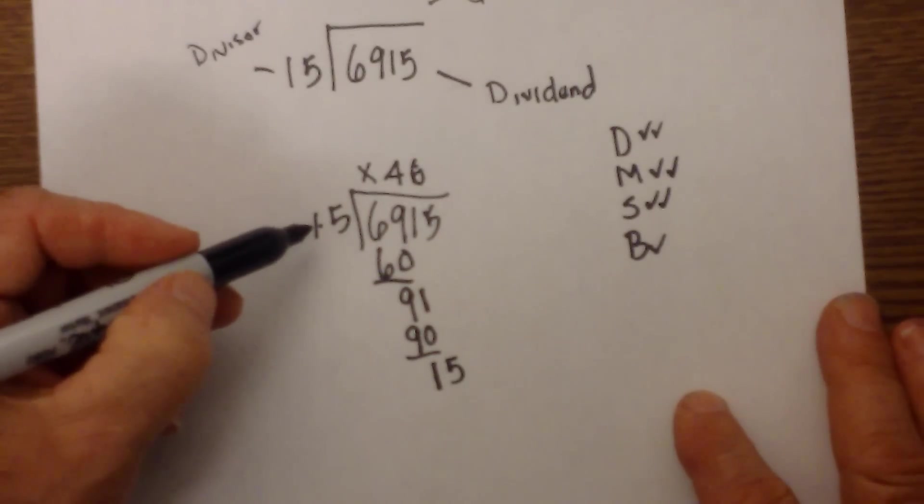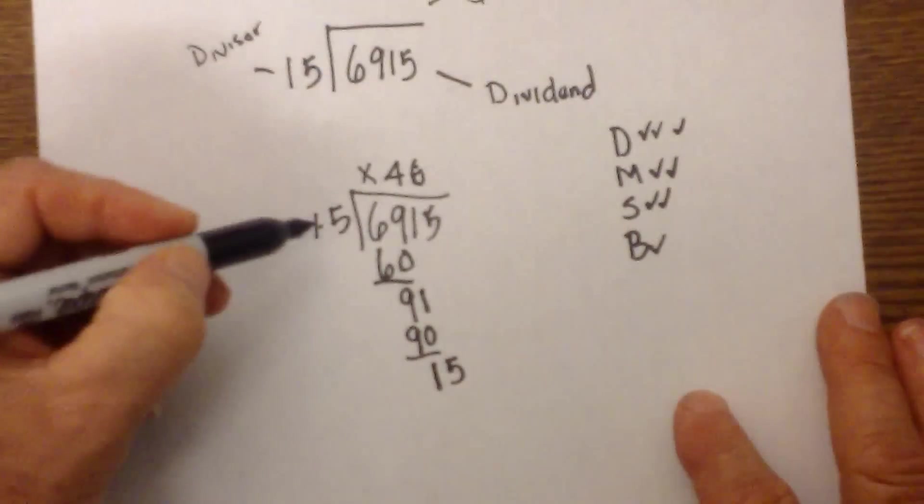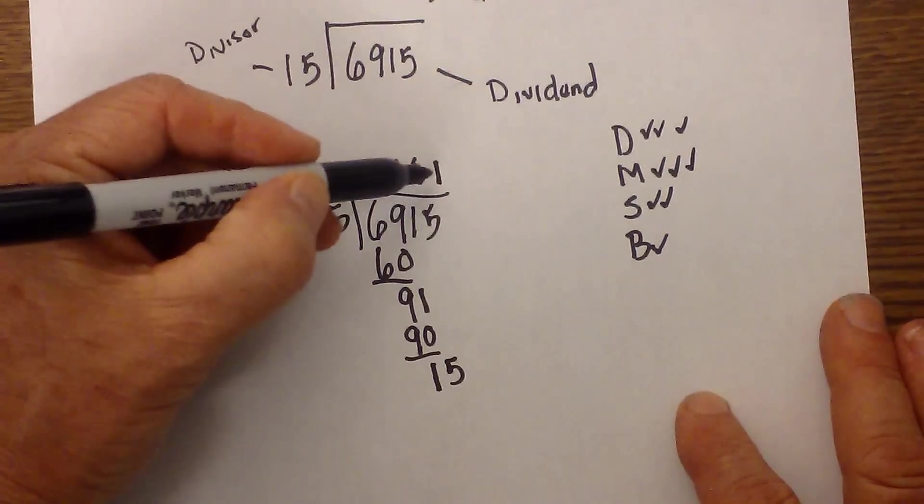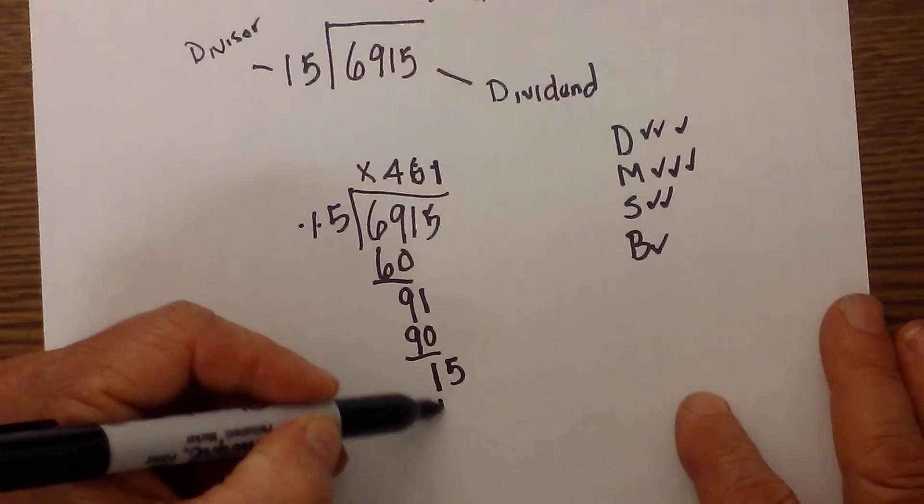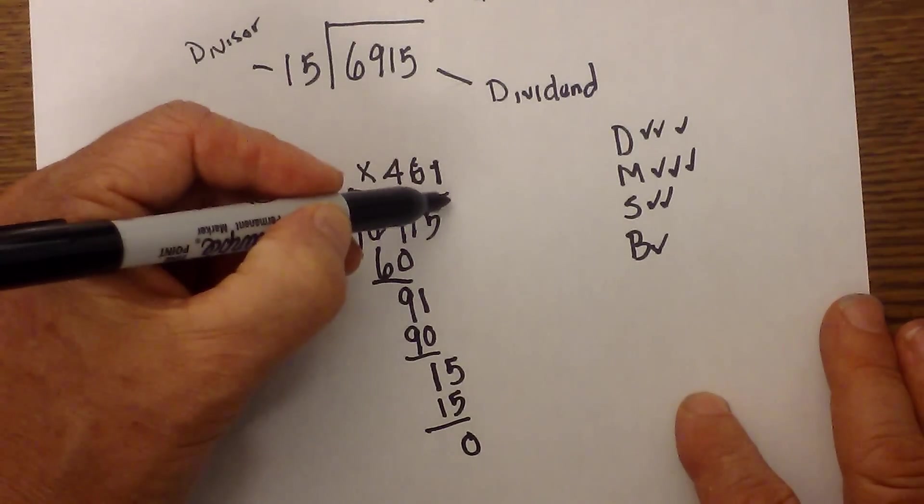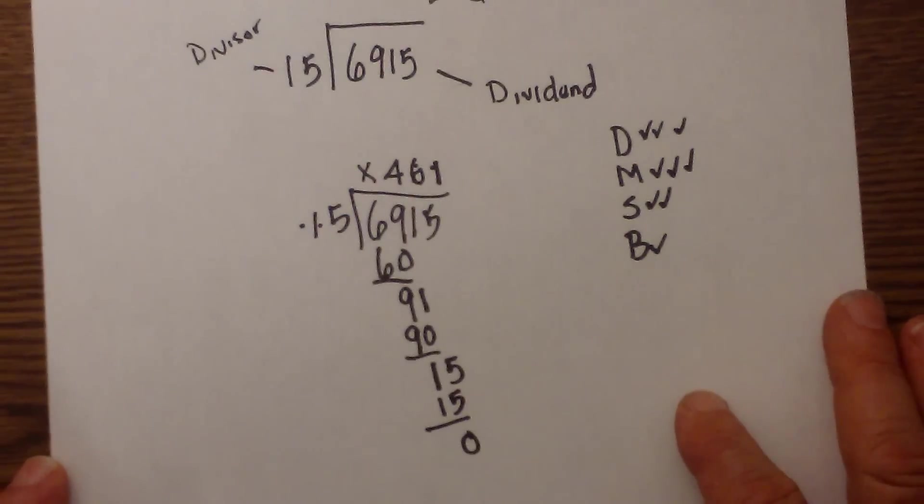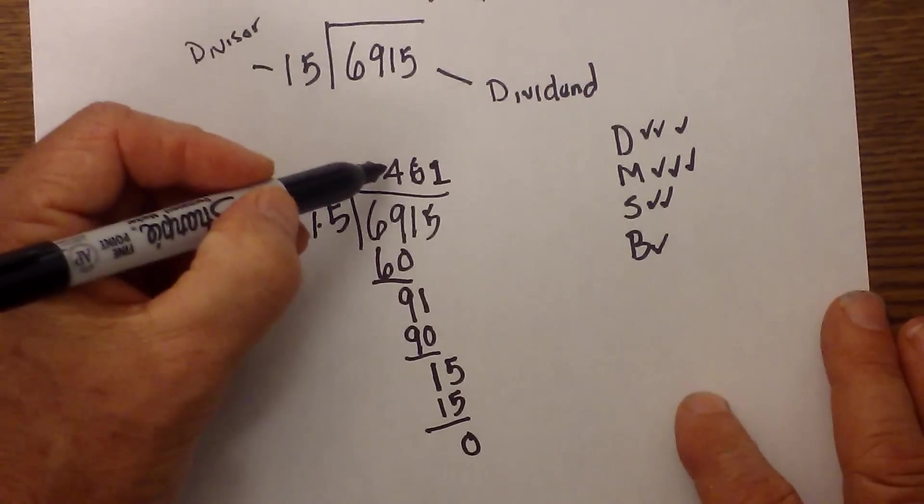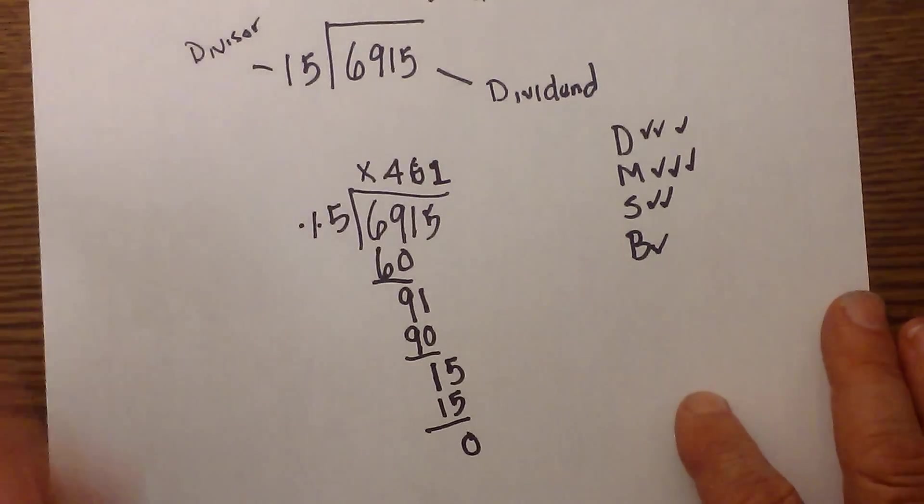Now we repeat. Division. 15 goes into 15 one time. Multiplication: 1 times 15 is 15. Subtract, that is 0. And there is nothing more to bring down. So at this time we have our answer, so it is 461.